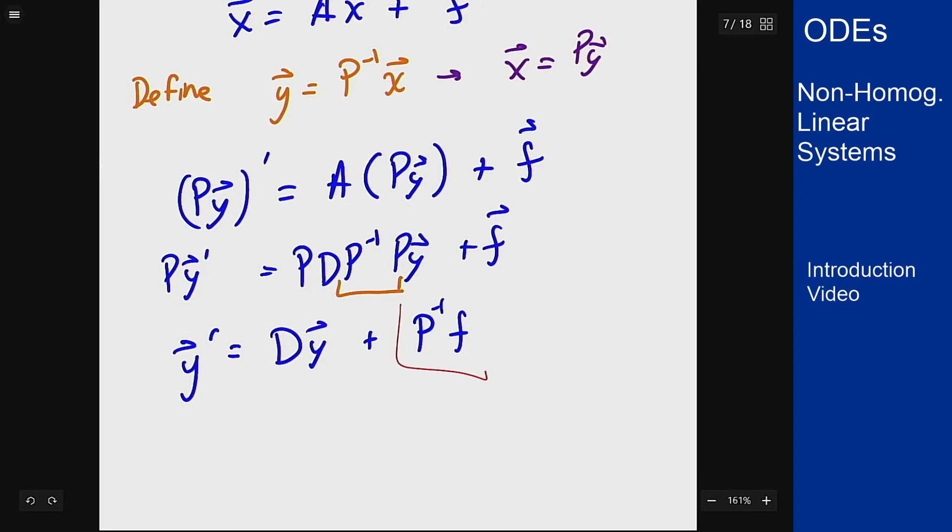I will get that y' = Dy + P⁻¹f. Since I know P⁻¹ I can compute this to give me system function g, but now this here is a diagonal matrix corresponding to the eigenvalues of A. So this is now a decoupled system.